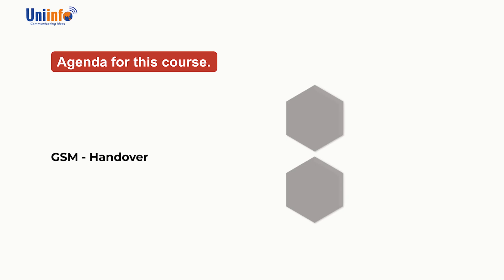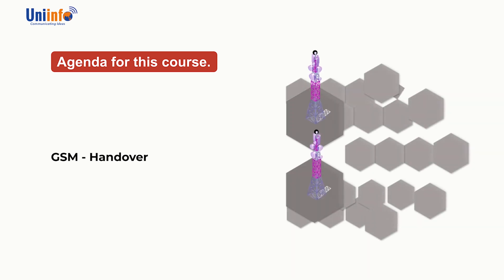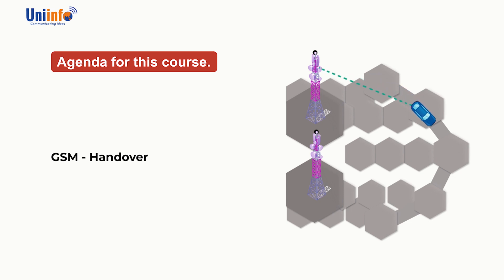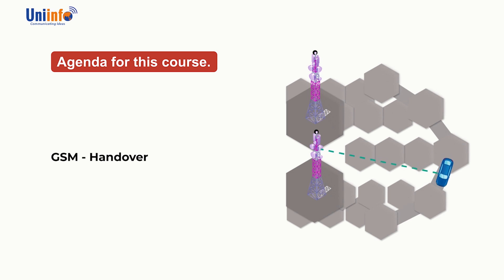GSM Handover: When a mobile device is moving from one sector to another in a connected mode, there is a handover of the call between the sectors. This takes place to maintain user connection link quality and to manage traffic distribution.